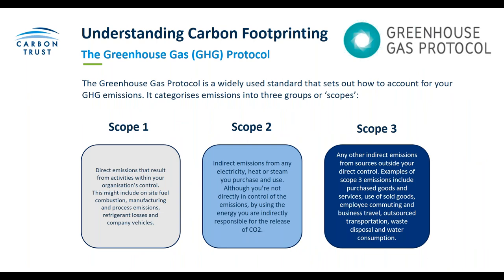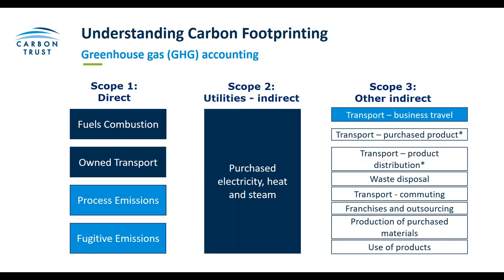Each set of emissions is split by the greenhouse gas protocol by scope. Scope one looks at direct emissions from your organisation's activities, including fuel combustion and manufacturing and processing emissions. Scope two looks at indirect emissions from purchased electricity to your organisation. Scope three is any other indirect emissions outside of your direct control. For example, scope one covers fuel combustion and own transport, process emissions and refrigerants. Scope two covers electricity and purchased heat and steam. Scope three covers business travel, grey fleet and waste disposal.